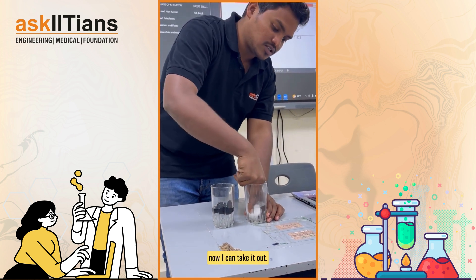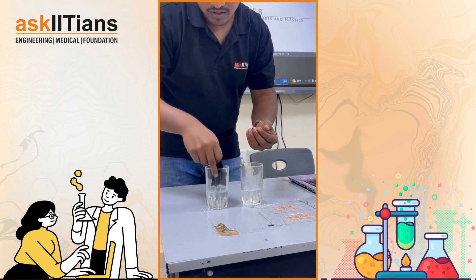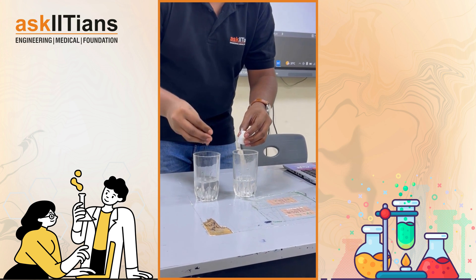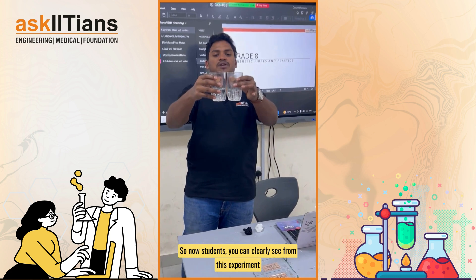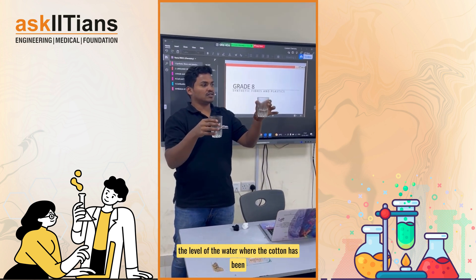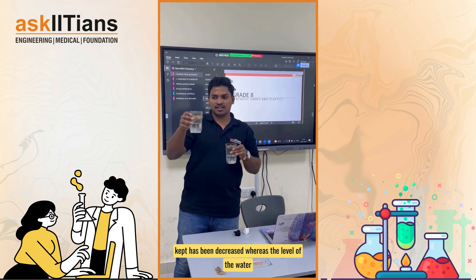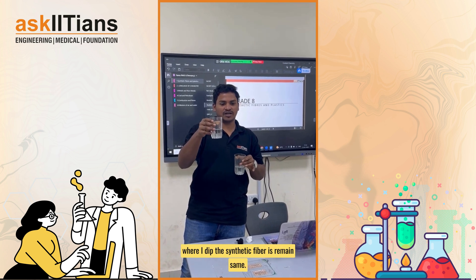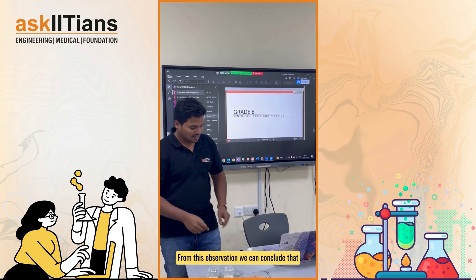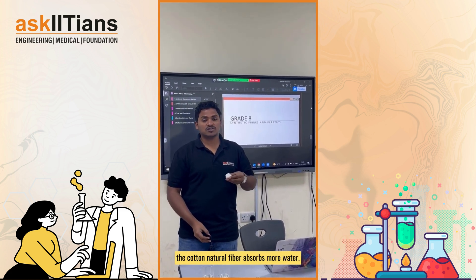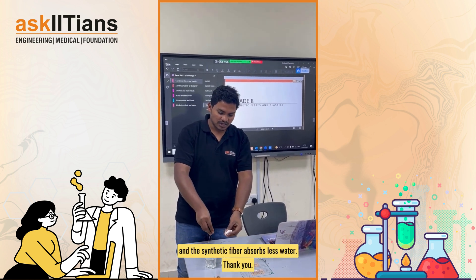Now I can take them out. Students, you can clearly see from this experiment that the water level in the glass where the cotton was kept has decreased, whereas the water level where the synthetic fiber was placed remains the same. From this observation, we can conclude that the cotton natural fiber absorbs more water, whereas the synthetic fiber absorbs less water.